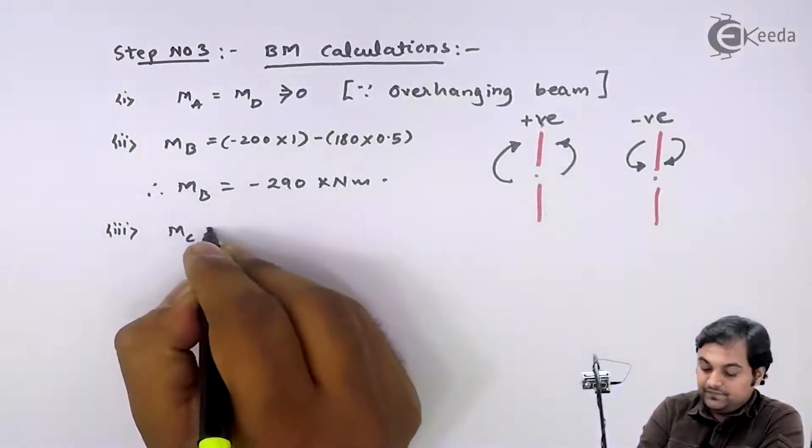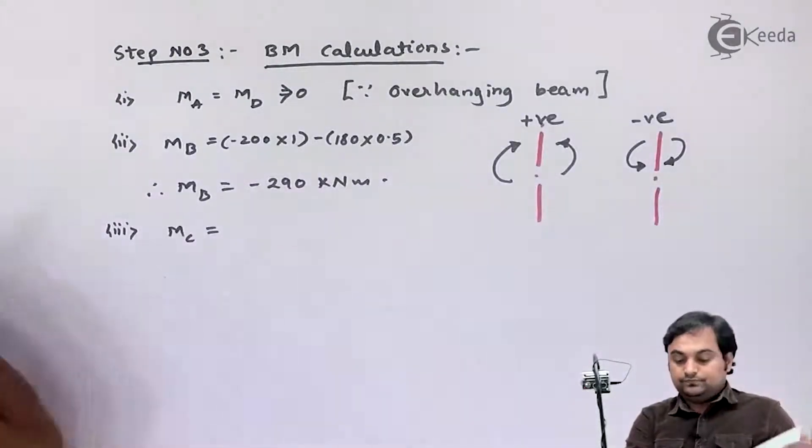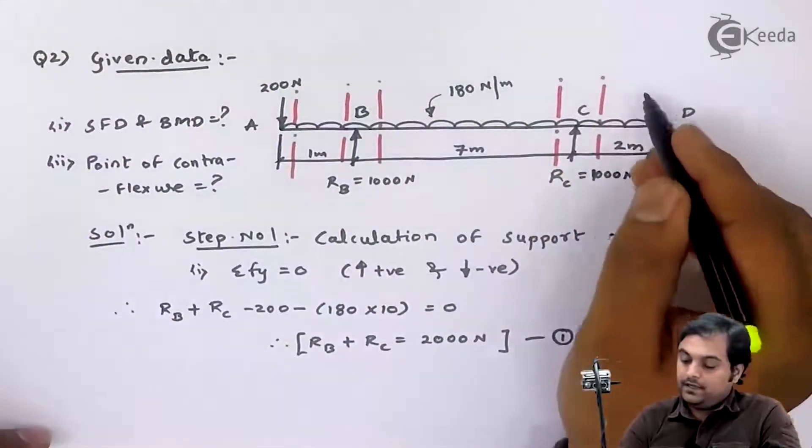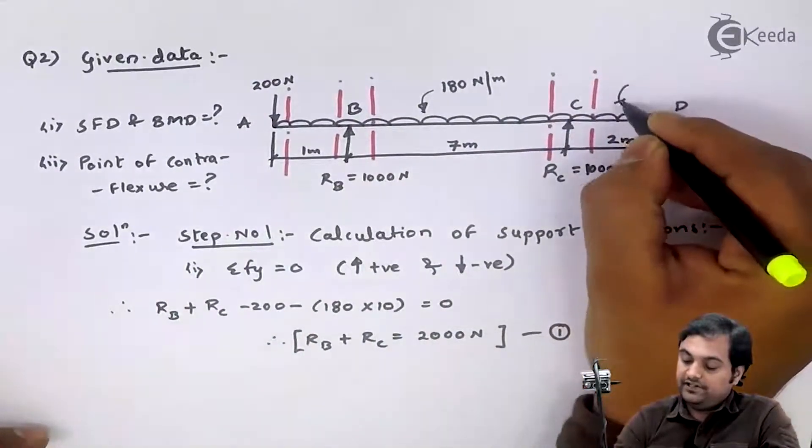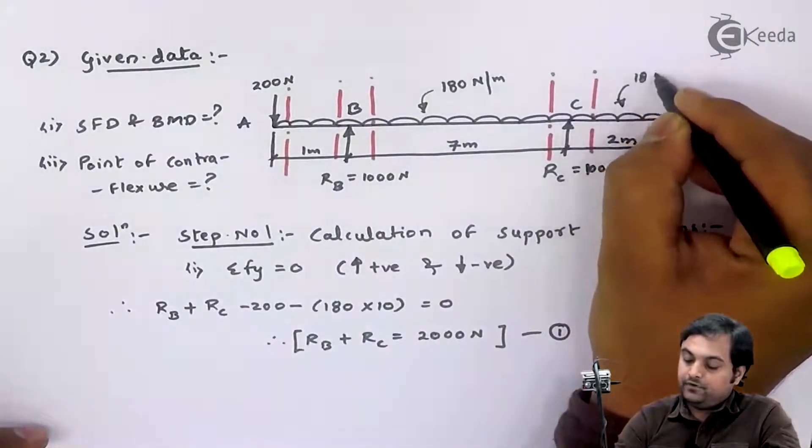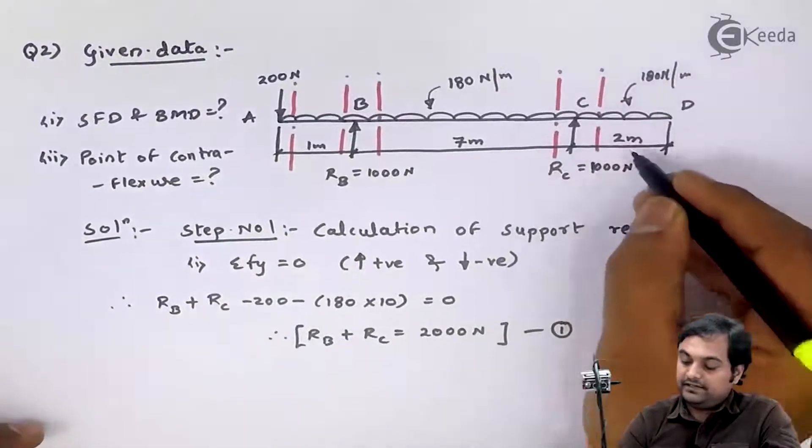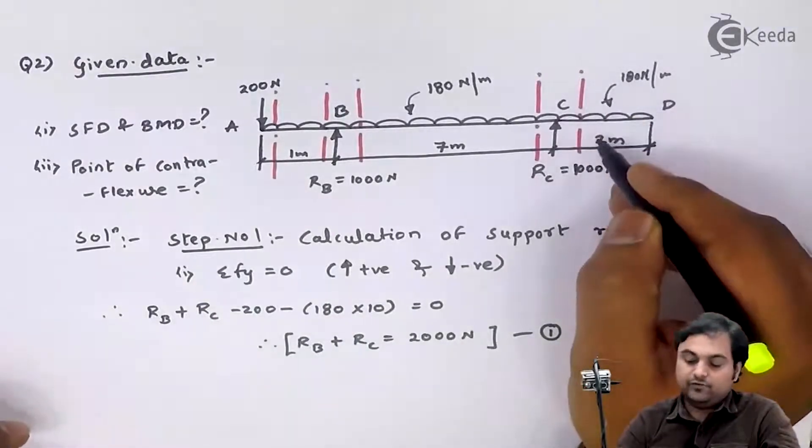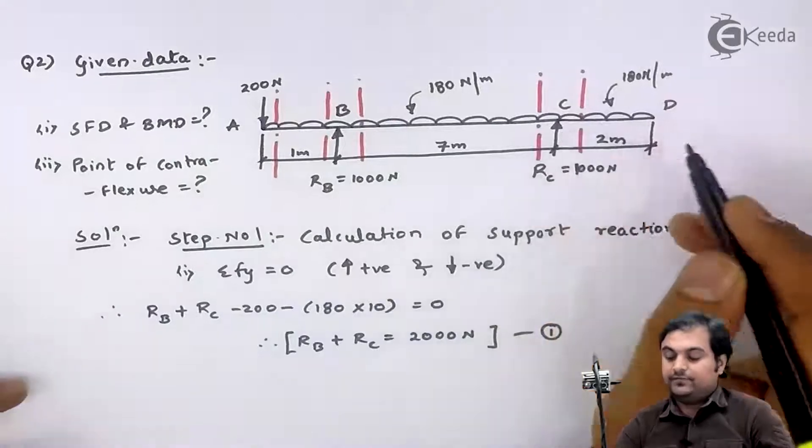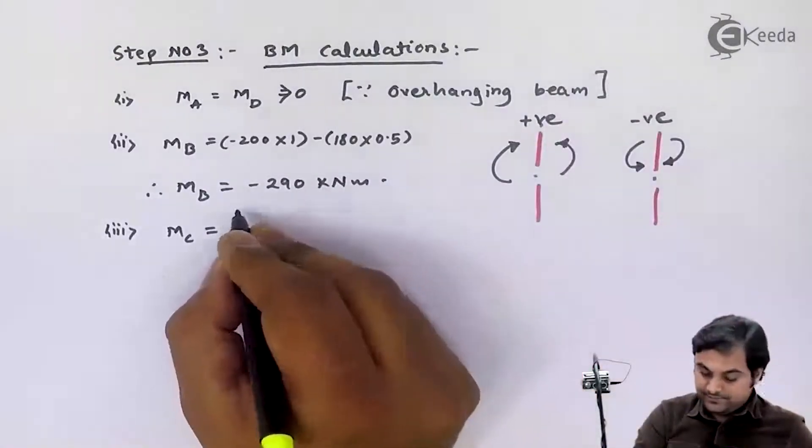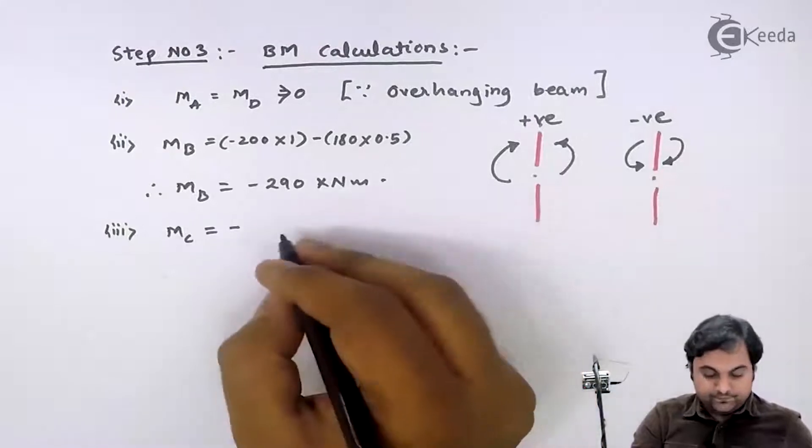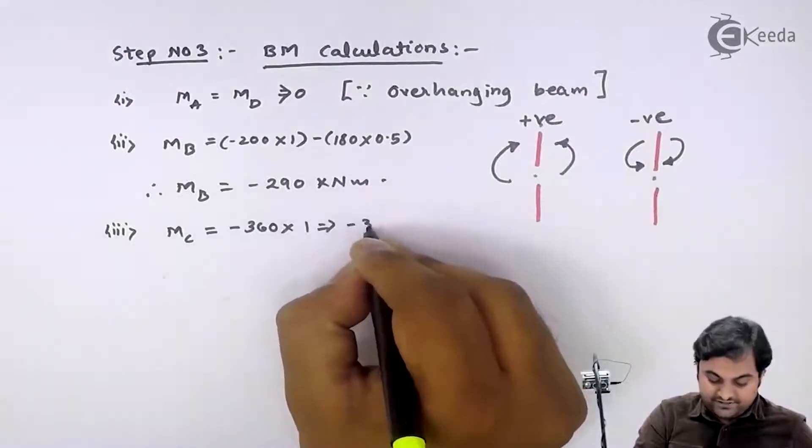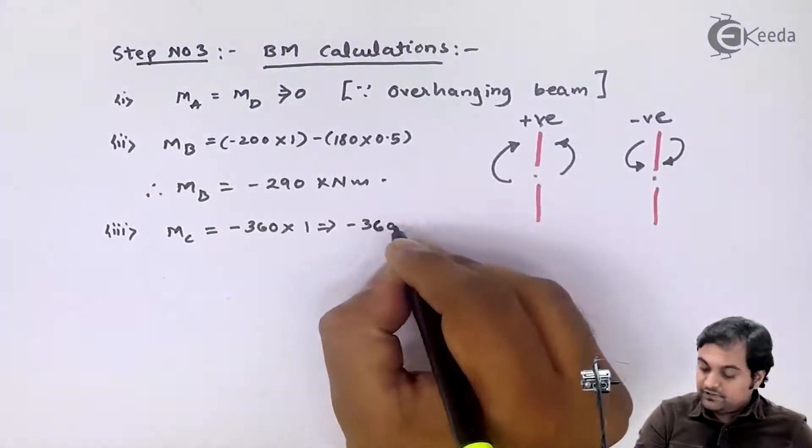Then moment at C is equal to, here if I take the section at C, 180 Newton per meter acting at 2 meter distance. So if I multiply 180 into 2, I would be getting the value of force, that is 360 Newton, acting at half. So here I have minus 360 into 1, that is minus 360 kilonewton meter.